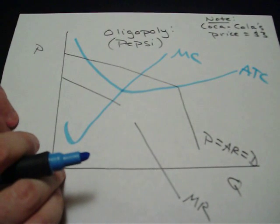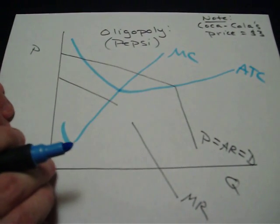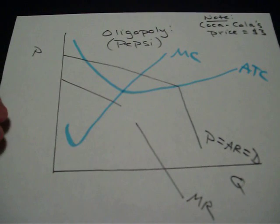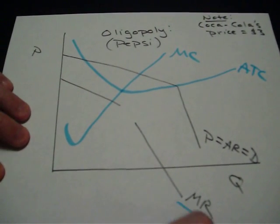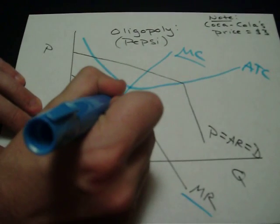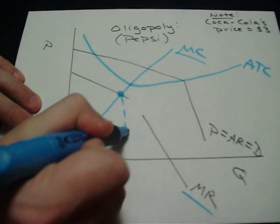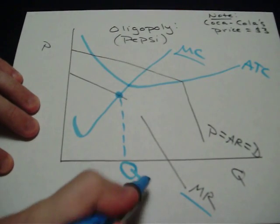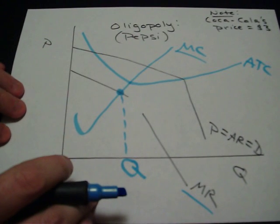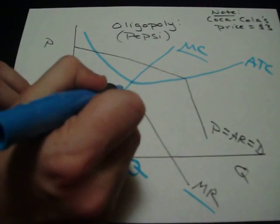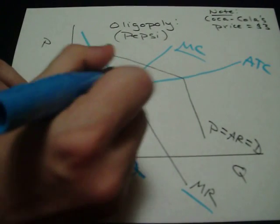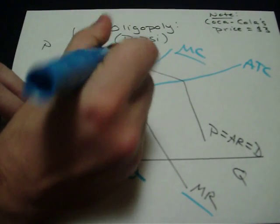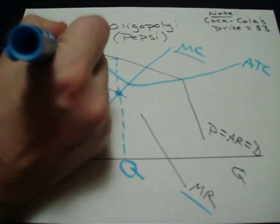The other thing that stays the same no matter what the industry is, when we're talking about the quantity and price that the firm should set, we always look for where MR equals MC. Here's where MR equals MC. Trace down. I find the quantity that the firm will want to produce that will maximize their profits. From that MR and MC spot, we can trace up to the price line to find the price that they should charge.